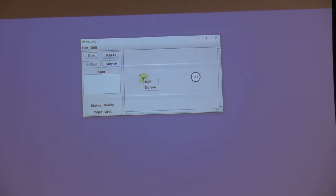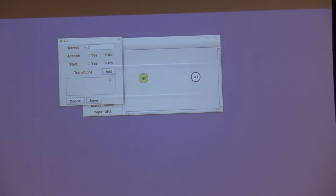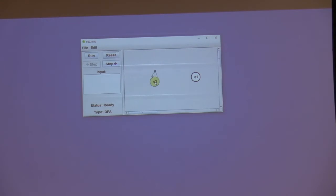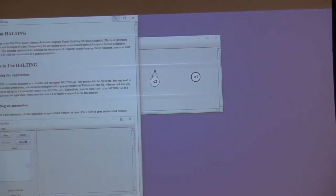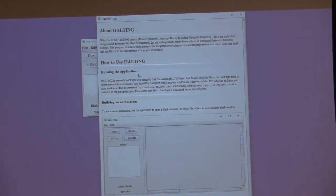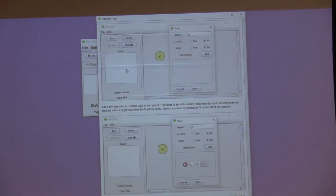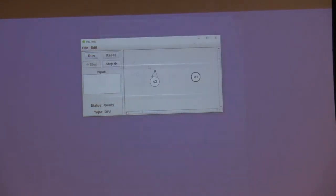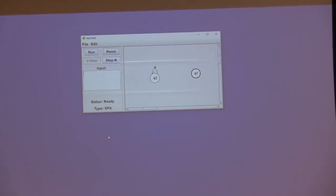I'll also show you what it looks like when a state transitions to itself, because that's a thing that can happen. So this is q2. It'll point to itself like that. And lastly, if there's anything that you're not sure how to do, I do have a user's manual under file help. That breaks down pretty much what I'm showing you here. How do you build an automaton? How do you run it? It's got screenshots and things like that. So yeah, I think that's everything I wanted to show you here. So I'm going to go back to the presentation now.